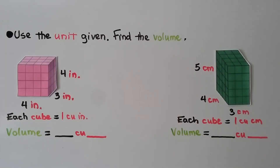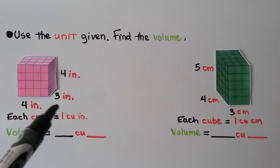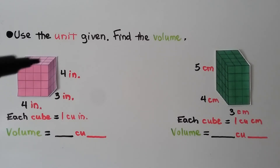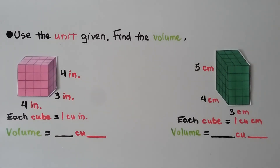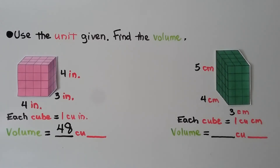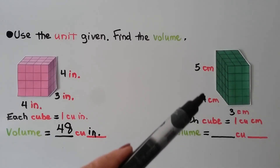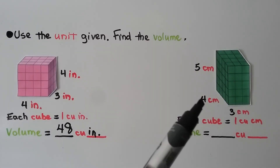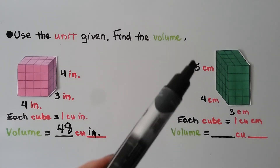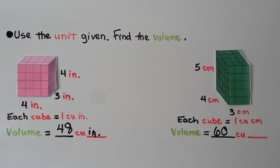Use the unit given to find the volume. This prism is in inches: 4 inches long, 3 inches wide, and 4 layers high. Each cube is 1 cubic inch. We multiply 4 times 3 — that's 12 — then multiply by 4 layers: 12 times 4 is 48. The volume is 48 cubic inches. The second prism is in centimeters: 3 centimeters in length, 4 centimeters in width, and 5 centimeters in height. We do 3 times 4 — that's 12 — times 5 equals 60. The volume is 60 cubic centimeters.